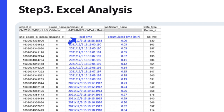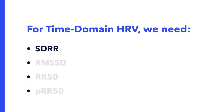Then in the next column, we plugged in a simple formula to get a sample range of 5 minutes exactly. Now for the calculations — we need to derive the following information to collect time domain HRV: SDRR, RMSSD, RR50, and PRR50.